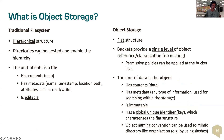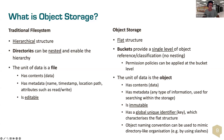A traditional file system is hierarchical — directories organize things. You can have as many directories as you want in a file system. In object storage, it's a flat structure: just buckets. There are no sub-buckets. In directories you can have as many subdirectories as you want; in object storage you just have your buckets and that's it.